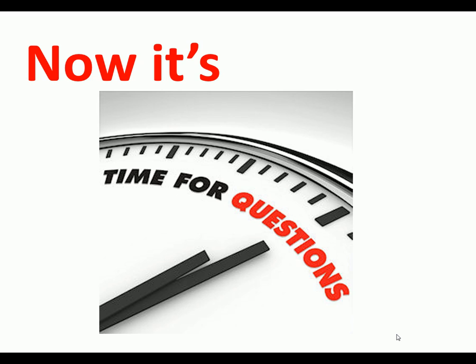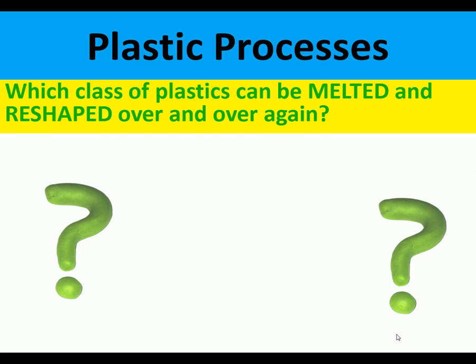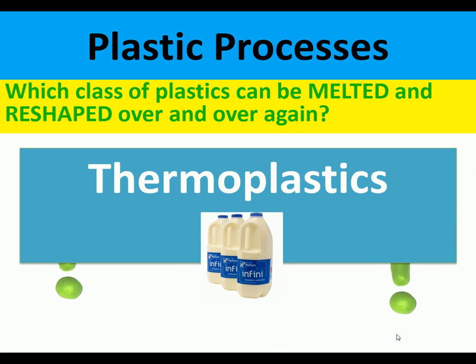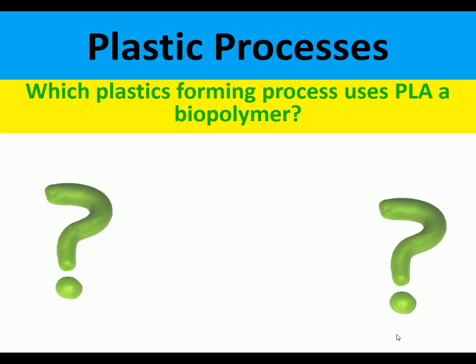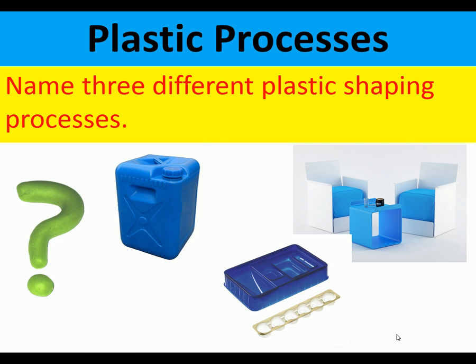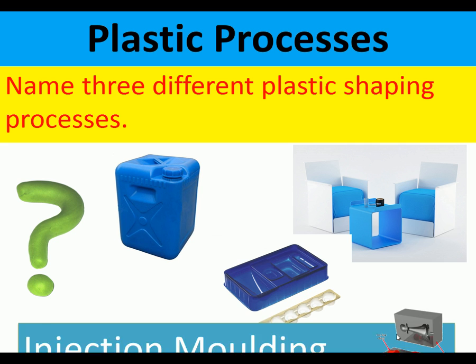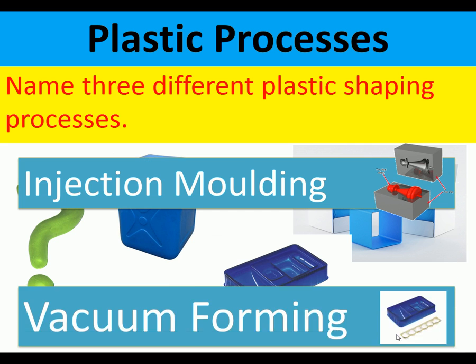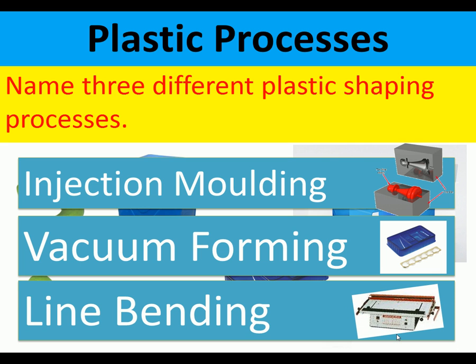Now it's time for questions. Which class of plastics can be melted and reshaped over and over again? Thermoplastics. Which plastic forming process uses PLA, which is a biopolymer? It is 3D printing. Name three different plastic shaping and forming processes: injection molding, vacuum forming, and line bending.